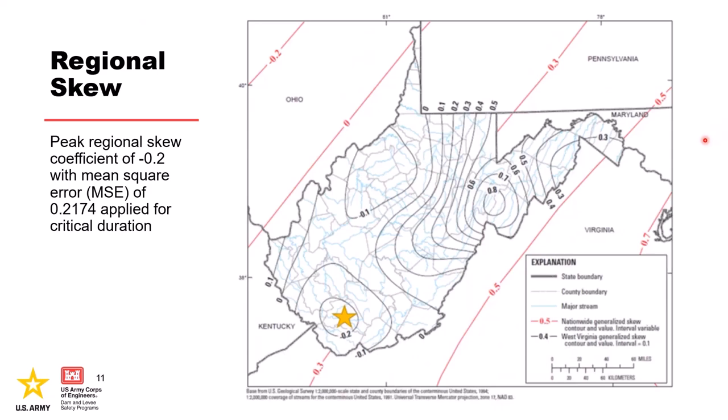With a little bit of research, a regional skew for the watershed was found. The peak regional skew is negative 0.2 with a mean square error of 0.217. Because R.D. Bailey has a two-day critical inflow, it was decided that the peak regional skew was still appropriate to apply to our two-day duration volume frequency analysis. In this study for West Virginia, they decided the best representation of regional skew is based on physical location within the state.